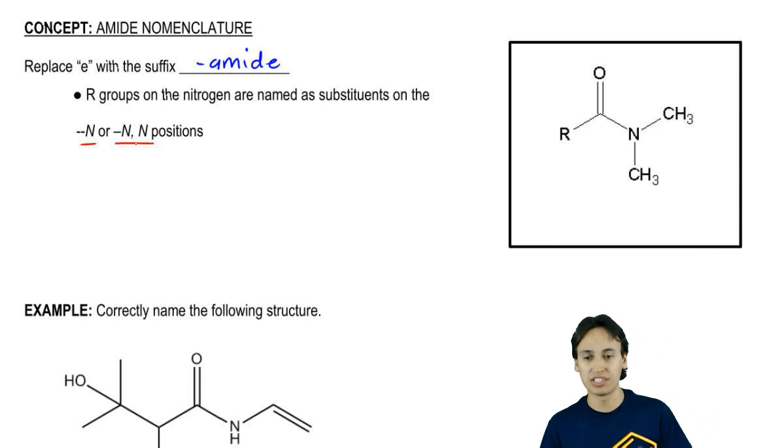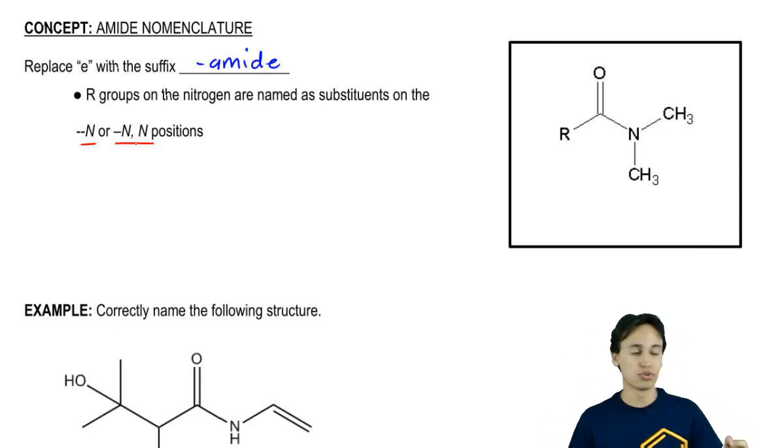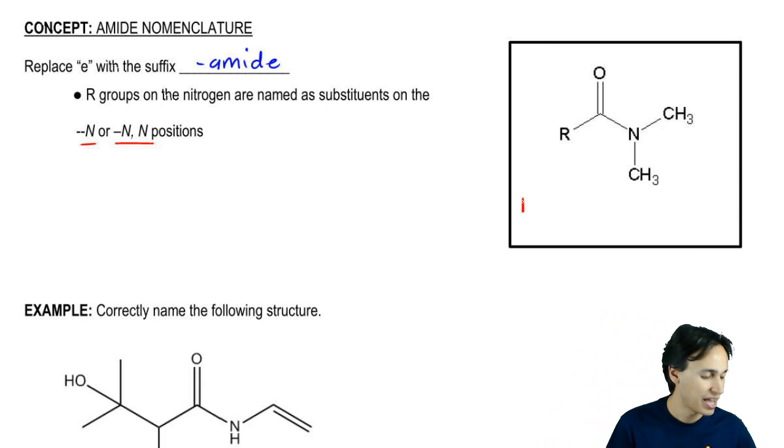It's just easier if I show you an example. For example, this general structure would be N,N-dimethyl. Notice because I have methyl groups coming off of it, and then it would be alkanamide.